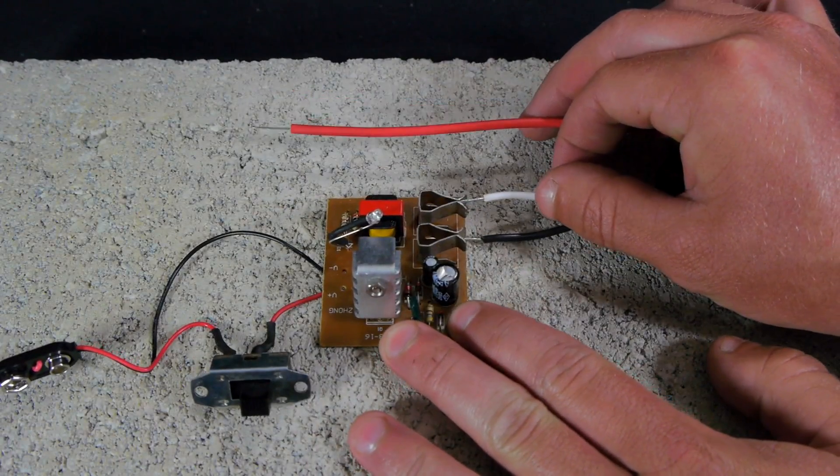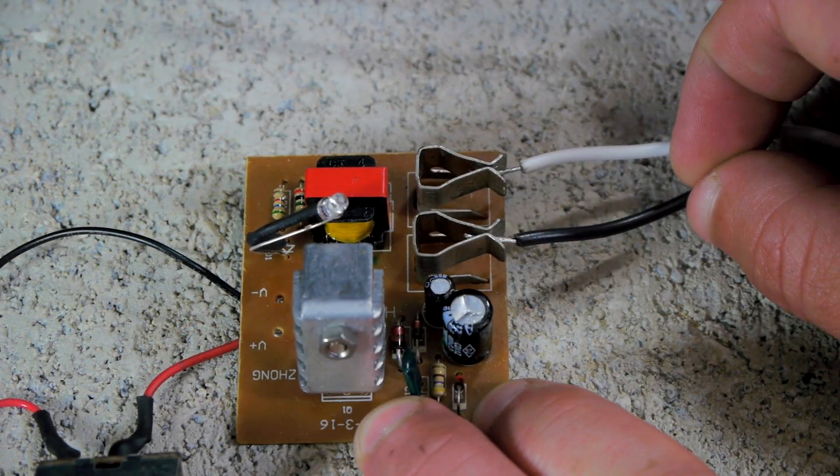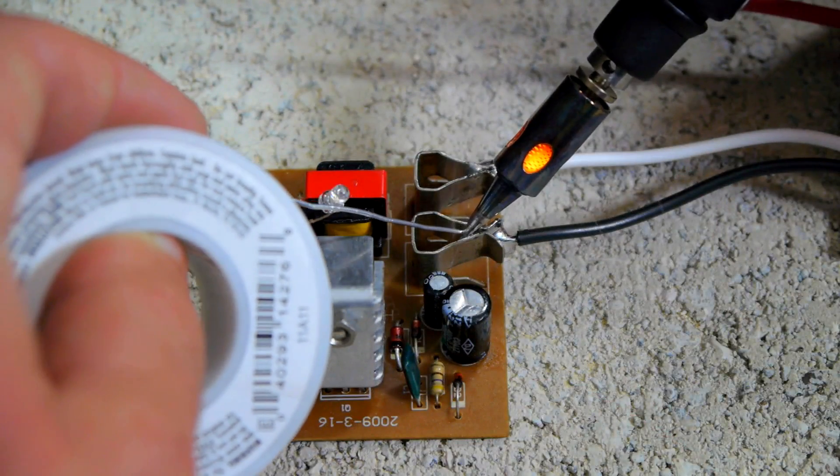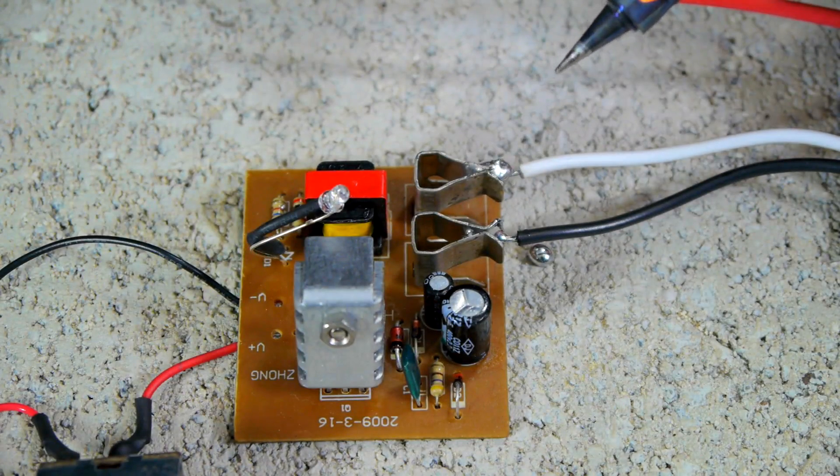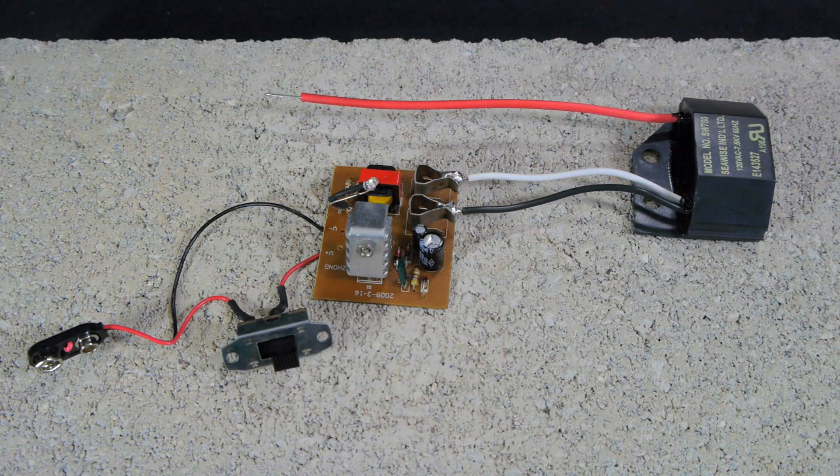The stripped sections of the white and black wire are each inserted into one of the output terminals on the power converter. A generous application of hot solder holds each wire in place. The electronics for this project are now nearly fully assembled.